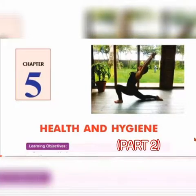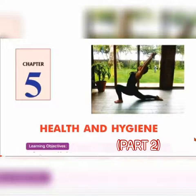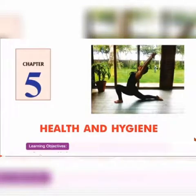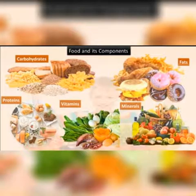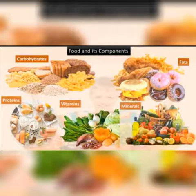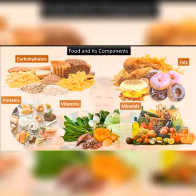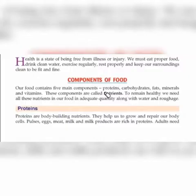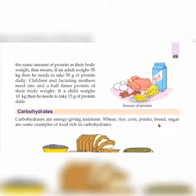Hello students, a very good morning to you all. This is the next part of your chapter on health and hygiene. In the previous video we studied the definition of health, what health means, and the different components of food. We have seen there are five major components: carbohydrates, proteins, vitamins, minerals, and fats, plus water and roughage. We also studied the sources and functions of proteins. Today we will study carbohydrates.